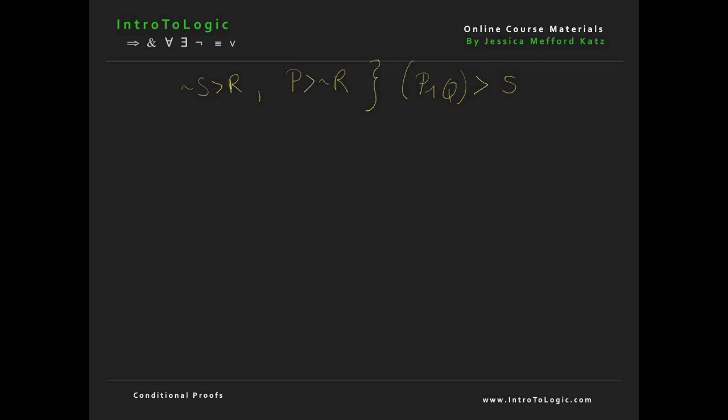Why is it we can get away with assuming the antecedent and deriving a consequent, and then getting a conditional? Well, keep in mind that conditionals, or the conditional symbol like we have in our conclusion here, is an if statement, roughly speaking. So what we're really saying when we get a conditional is if we had this antecedent, then we could get this consequent.